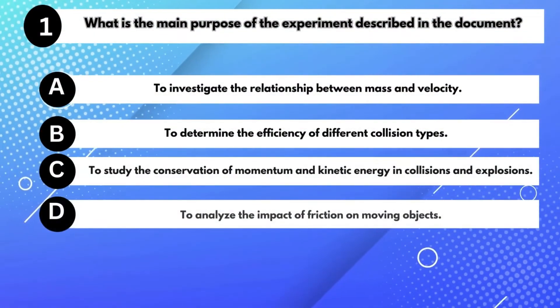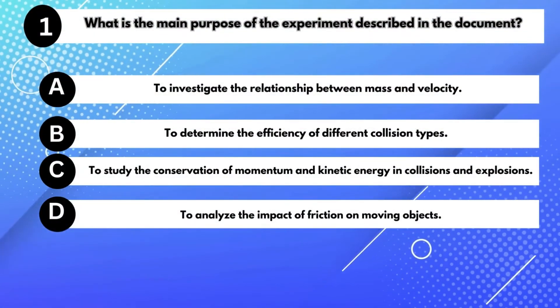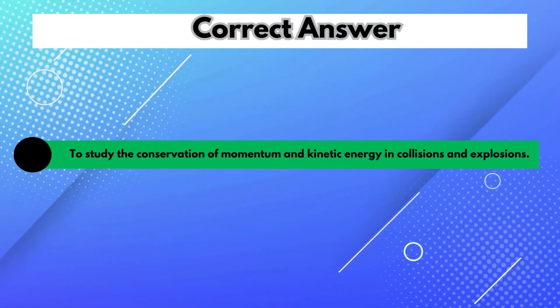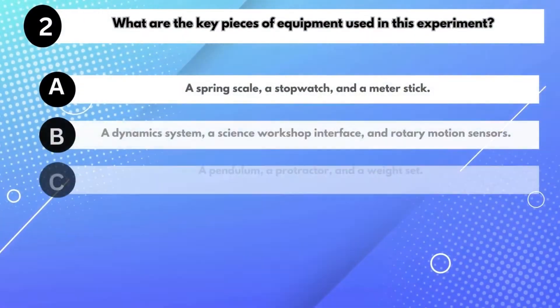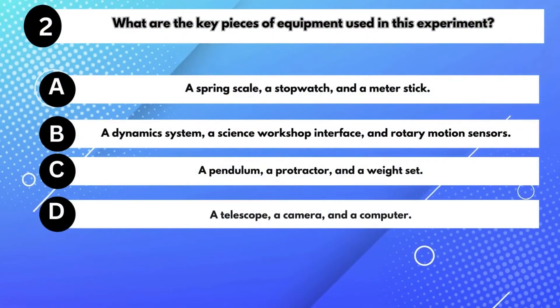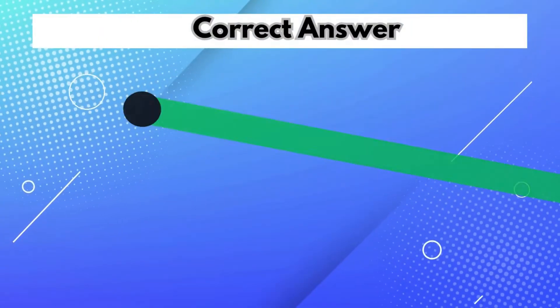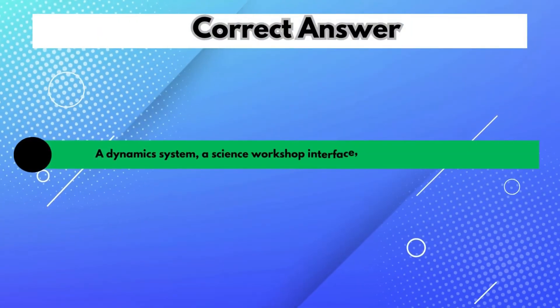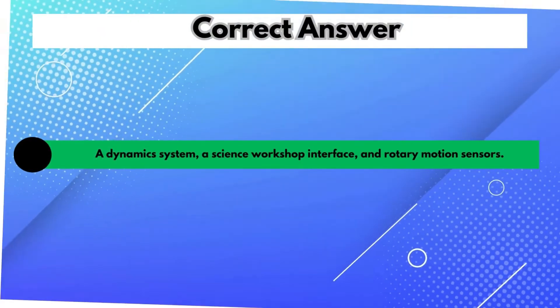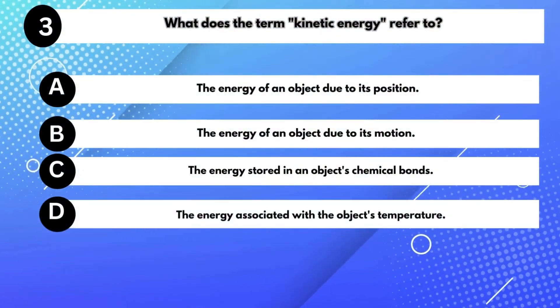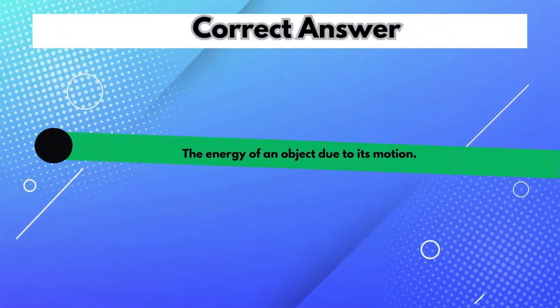What is the main purpose of the experiment described in the document? Answer C: To study the conservation of momentum and kinetic energy in collisions and explosions. What are the key pieces of equipment used? Answer B: A dynamic system, a science workshop interface, and rotary motion sensors. What does the term kinetic energy refer to? Answer B: The energy of an object due to its motion.